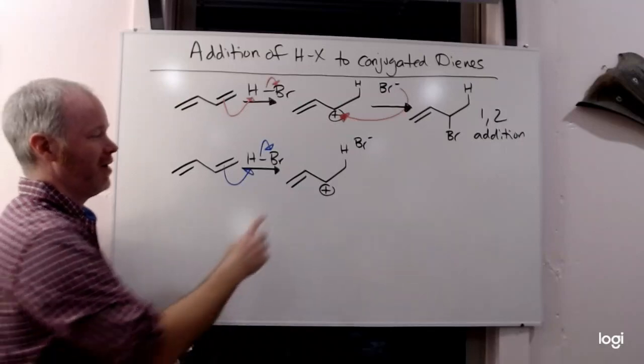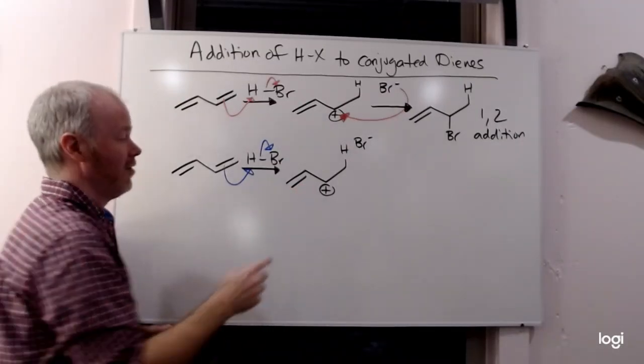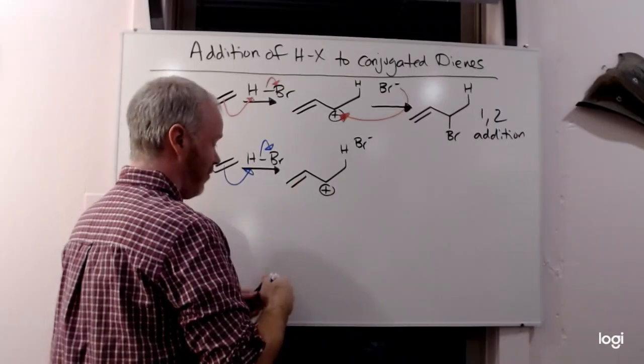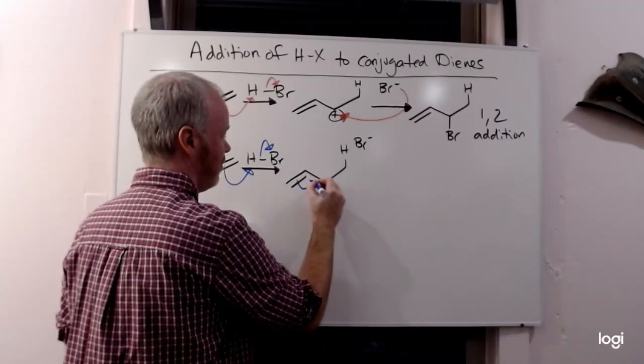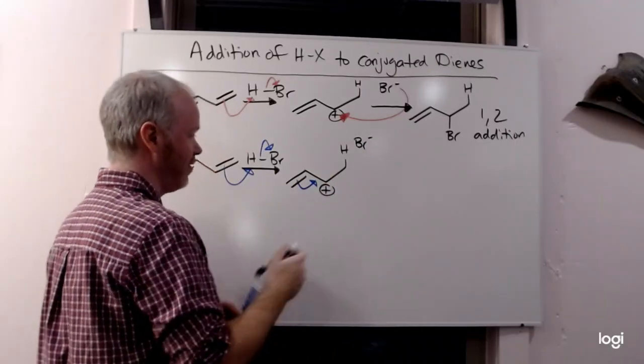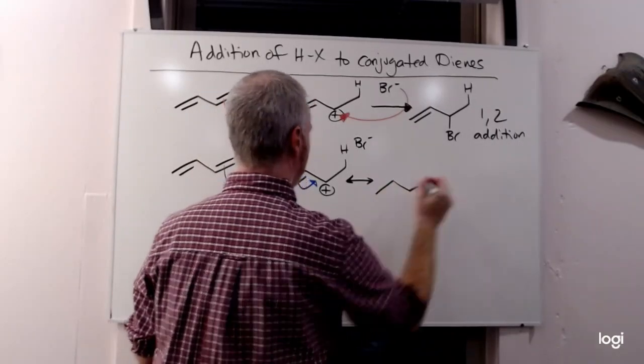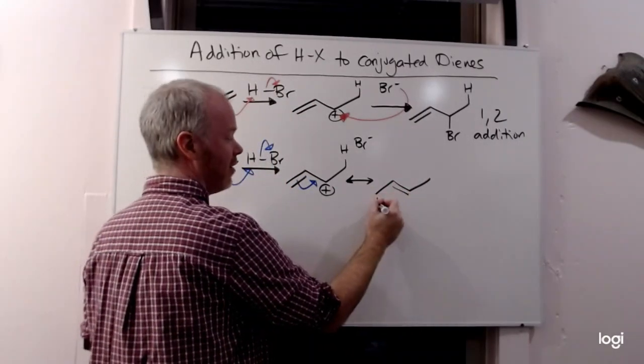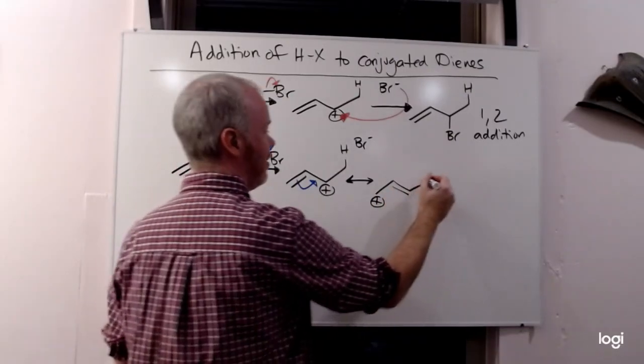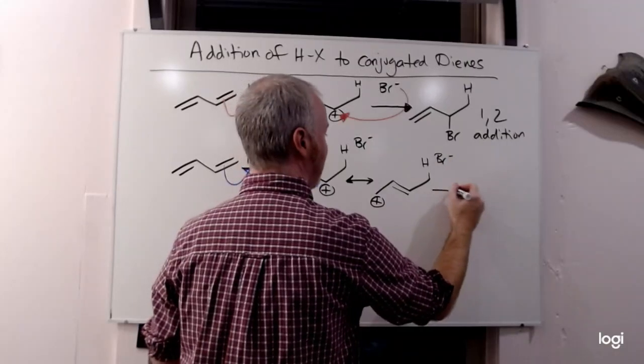But what can happen here is this does have another resonance structure. If we're drawing this in terms of a mechanism, we can show these electrons could be shared toward the positive charge. It's a double arrow for a resonance structure. Moving the pi electrons to the center, positive charge on the end, hydrogen's still here, bromine's still left over.